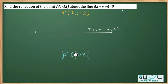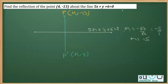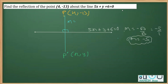Now the first thing I'm going to do is obtain the slope of this line using m = -a/b, so it is -5 over 1, giving a slope of -5. We know that the line PP-dash has to be perpendicular to the given line — that's how reflection works. Since two perpendicular lines have slopes that are negative reciprocals of each other, the slope of PP-dash is positive 1 over 5.